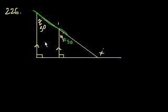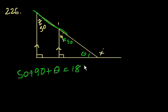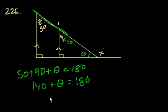And if that's true, then what is this angle right here? Well, 50 plus 90 plus this angle is equal to 180, right? So we could say 50 plus 90 plus theta is equal to 180. So you get 140 plus theta is equal to 180. Subtract 140 from both sides. Theta is equal to 40.